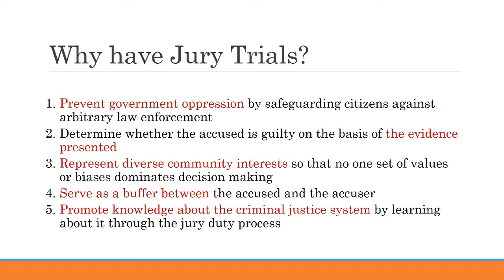The first reason is that the Founding Fathers were very concerned about giving too much power to government — particularly, they were concerned that the government would have the ability to charge you with crimes, prosecute you, or convict you without any real evidence. So they decided to create a jury system as a safety mechanism so that the jury could evaluate the charges and evidence brought against you. The first purpose of a trial is to prevent government oppression by safeguarding citizens against arbitrary law enforcement. Second, juries are there to determine whether the accused is guilty on the basis of evidence presented. Third, they represent a diverse community of interests so that no one type of values or biases dominates the decision-making.